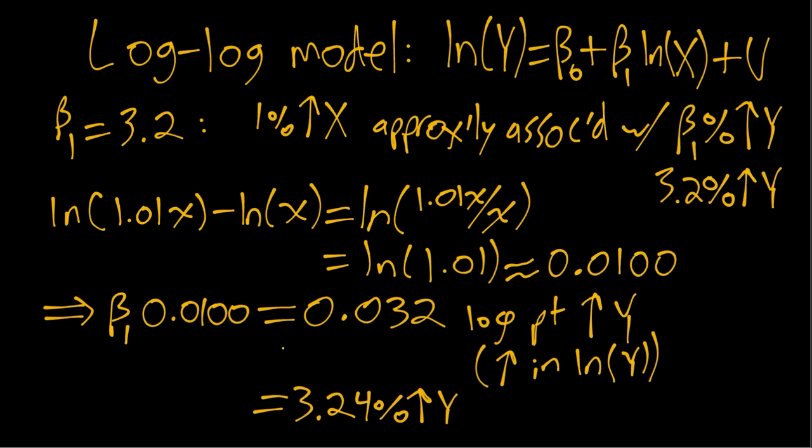So again, the approximation is not perfect. We sort of have this 4 where before there was no 4, but it's very, very close. If beta 1 were larger, we would have a worse approximation. Or again, if we thought about say a 50% increase in x, we would not have a good approximation. But in this case, when beta 1 is around 3 and we just look at a 1% increase in x, we get a very good approximation.